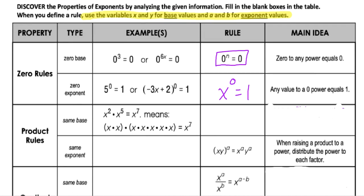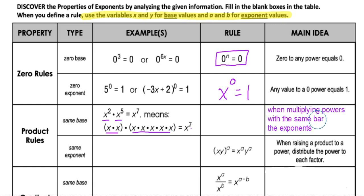Our second property is the product rules. Remember, product is the answer to a multiplication situation. When multiplying powers with the same base — for example, x to some power times x to some power — we add the exponents. So the generic form is x^a times x^b equals x^(a+b).